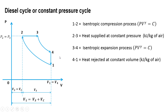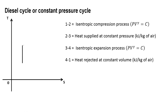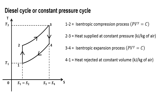The same cycle can be expressed on the T-S diagram. On the T-S diagram: process 1 to 2 is isentropic compression, so S1 equals S2. During 3 to 4, isentropic expansion, S3 equals S4. Process 2 to 3 is heat supplied at constant pressure — this is the constant pressure line. And 4 to 1 is heat rejected at constant volume — this is the constant volume line.